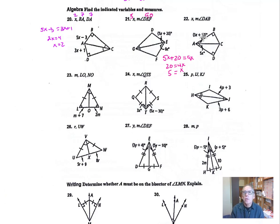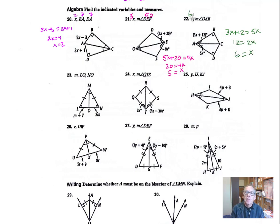Let's look at number 22. This angle is bisected, so 3x plus 12 equals 5x. Taking away 3x from both sides gives 2x equals 12, so x equals 6. Find the measure of angle DAB: that's twice 5x, which is twice 30, giving 60 degrees.